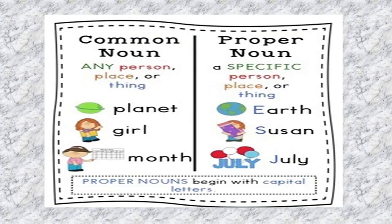In the same line, we have some more examples. When you say we are on a planet, the word planet can be any planet, so it is a common noun. But when you say the name of our planet is Earth, you are providing a specific name, so the word Earth becomes your proper noun.